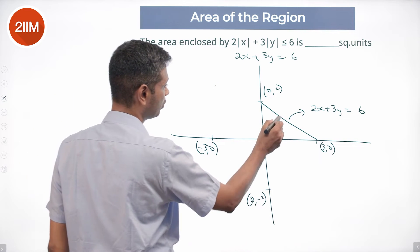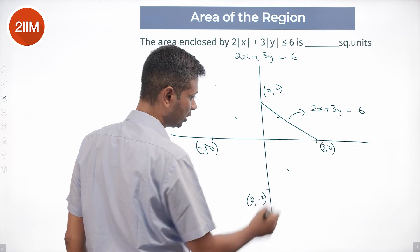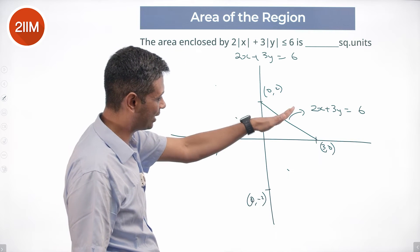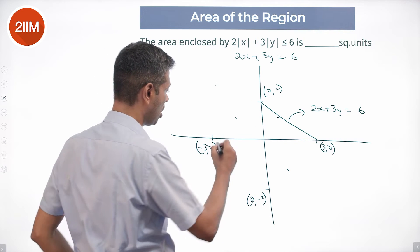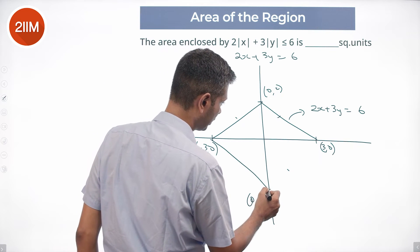If a point here works, a point here will work. Point here works, a point here will work. Instead of x, put minus x, that will work. Instead of y, put minus y, that will work. We're dealing with the shape like this.